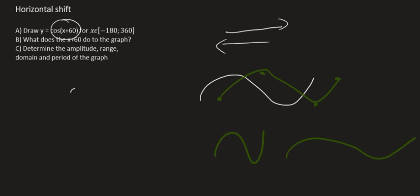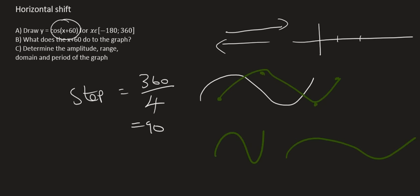So because our length is not changing, our period will stay 360, and so the step that we're going to use on the calculator will be 360 over 4, which is 90. Now what that means is that later on when we draw this, the steps on your x-axis will also go in 90s.